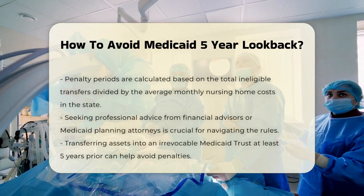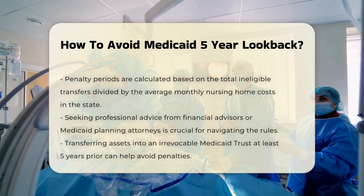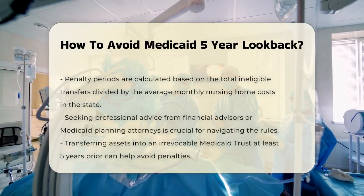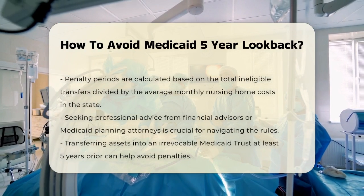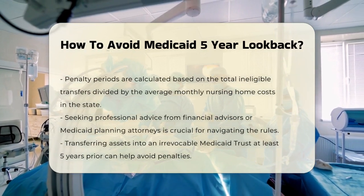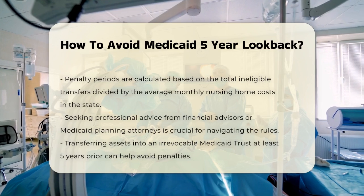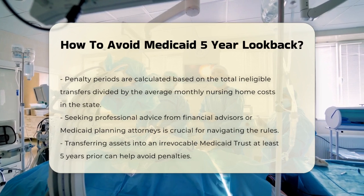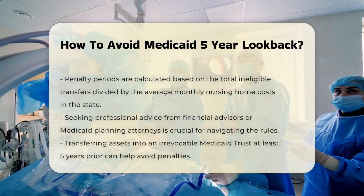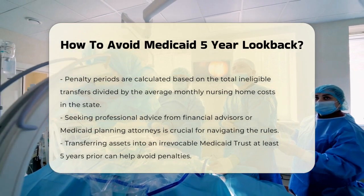Calculating the penalty period. If Medicaid finds ineligible transactions, the penalty period is calculated by dividing the total amount of the ineligible transfers by the average monthly private patient rate for nursing home care in your state. For example, if $50,000 was gifted and the average monthly cost is $5,000, the penalty period would be 10 months.